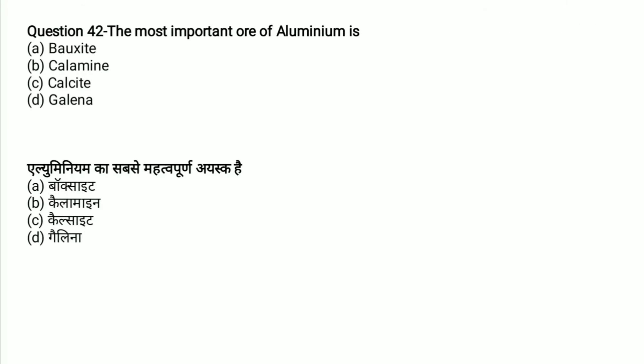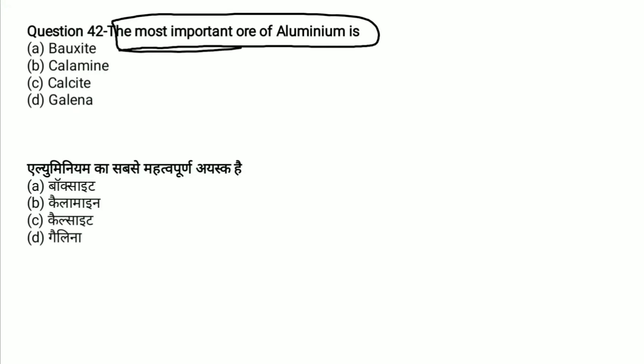The most important ore of aluminum — what is the ore of aluminum? Bauxite. And Calamine is the ore of which element? Zinc.